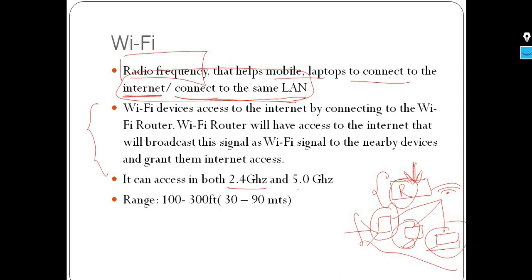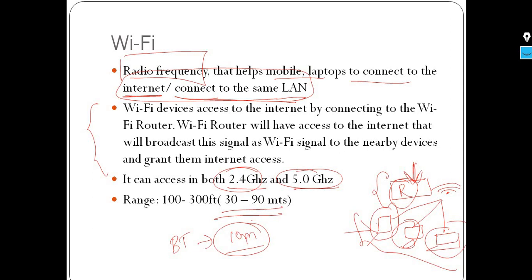Wi-Fi can connect on two frequencies: 2.4 GHz and 5 GHz, while Bluetooth uses primarily 2.4 GHz. The range for Wi-Fi is 30 to 90 meters, whereas Bluetooth has a range of only about 10 meters. Wi-Fi also consumes more power compared to Bluetooth, which has less power consumption.